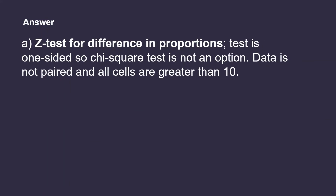For question A, a z-test for difference in proportions would be the best option. Because the word 'increase' is used, we know that the test is one-tailed, which means we cannot use a chi-square test. The data is also not paired, so we would not use McNemar's test. Lastly, we have more than 10 values per cell, so we do not need to use Fisher's exact test.